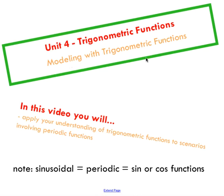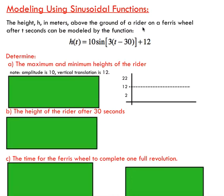This video will deal with modeling trigonometric functions in the real world. We're going to take scenarios that can be modeled using periodic functions and apply our understanding of trigonometric functions to model those scenarios. The first one involves a rider on a ferris wheel. We've got a function here that models the rider's height over time as the ferris wheel rotates in circular motion.